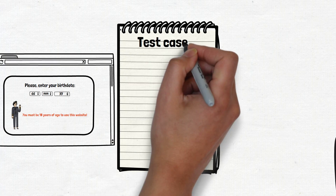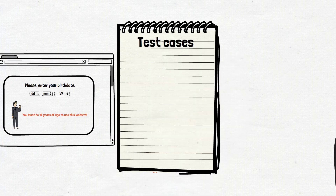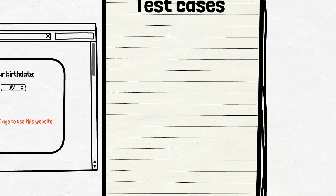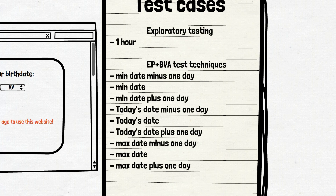In our case we can use experience-based exploratory testing, equivalence partitioning, and boundary value analysis. If you don't know these techniques, you can check our videos about them. As a result, instead of 45,000 test cases, you will run just 20 to 30 in total.